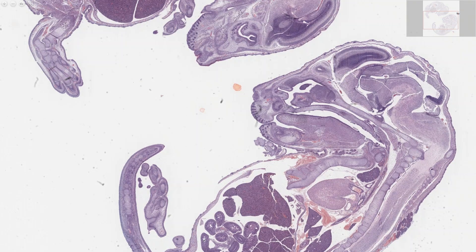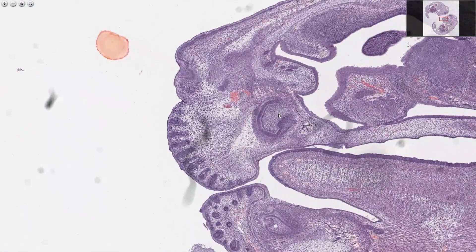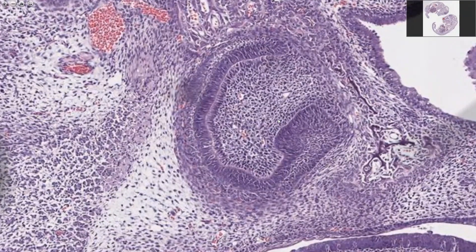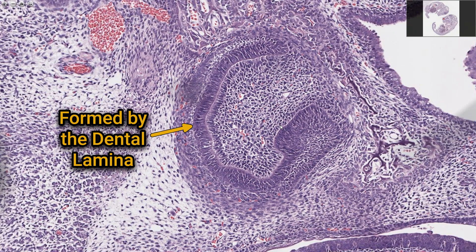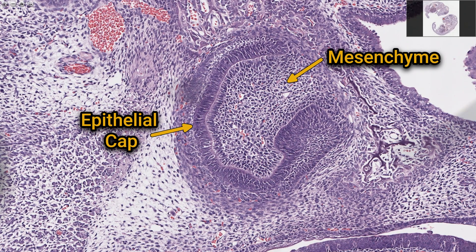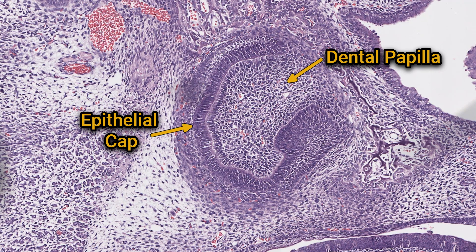To examine this process we're going to look at a section of piglet's jaw and mouse jaw. The first stage of development is the formation of a horseshoe-shaped ridge of epithelium, the dental lamina, which pushes down into the underlying mesenchyme and forms a cap over a condensed ball of mesenchymal cells. At this cap stage we can identify three key parts: the epithelial cap, which will become the enamel organ; the ball of mesenchyme inside, which is the dental papilla and will form dentin and pulp; and the mesenchyme surrounding it, the dental follicle, which will form the periodontium.